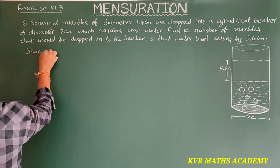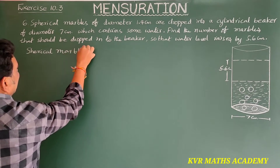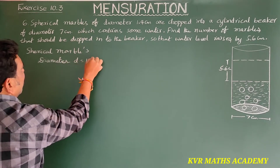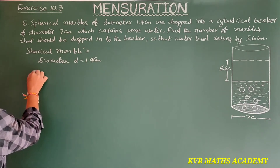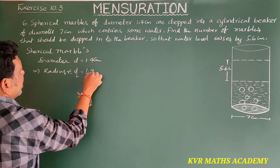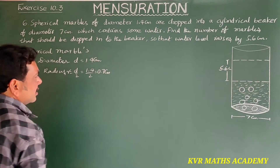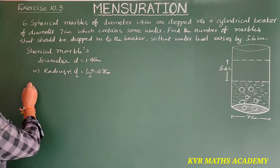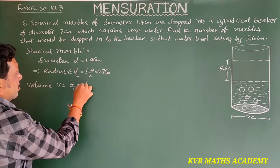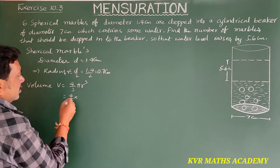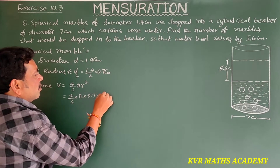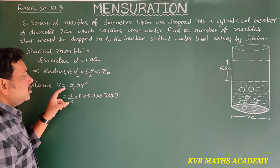For the spherical marble: diameter d is equal to 1.4 centimeters. Therefore radius r equals d by 2, that is 1.4 by 2 equals 0.7 centimeters. Its volume v equals 4 by 3 pi r cubed, that is 4 by 3 into pi into 0.7 cubed. Keep it like this without simplifying.